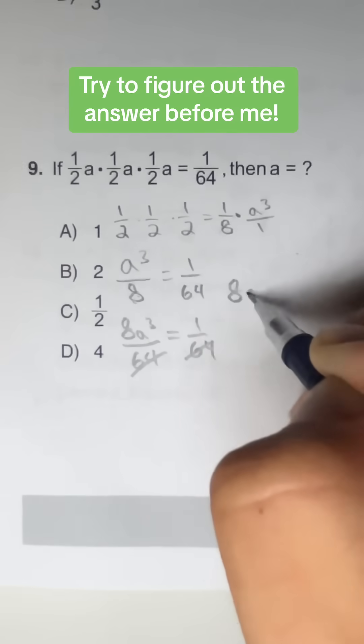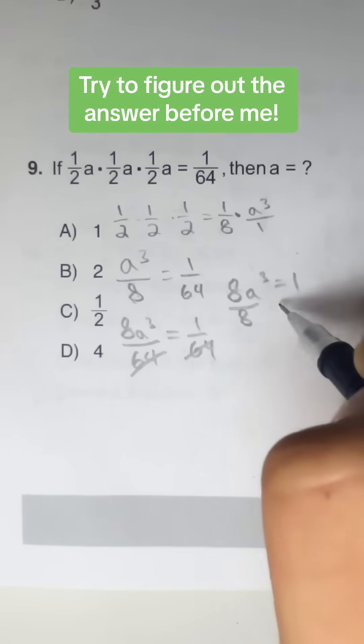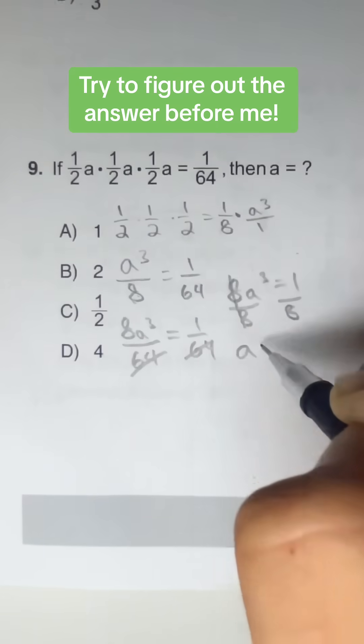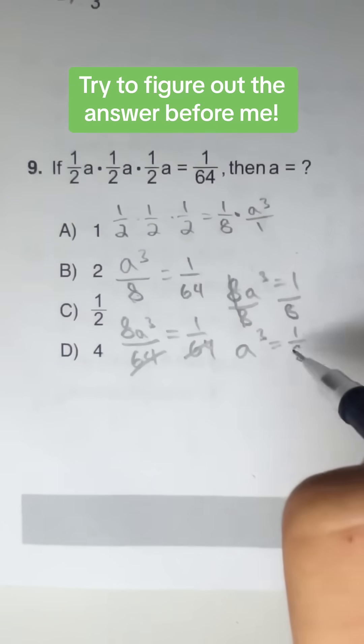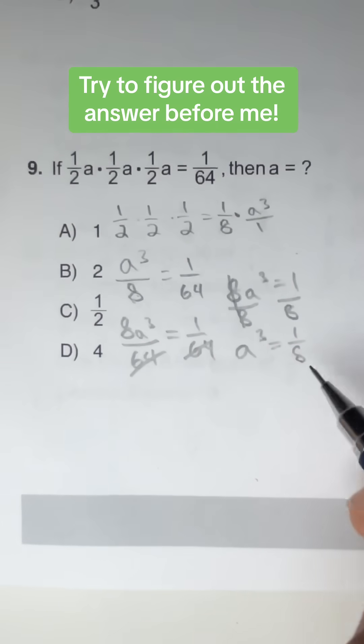So if we have 8 times A to the third is equal to 1 and we divide both sides by 8, we would get A to the third power is equal to 1 eighth. Now what number times itself 3 times is going to get to 1 eighth?